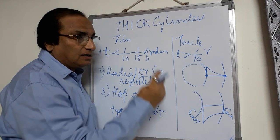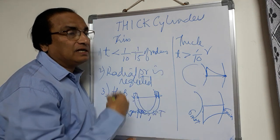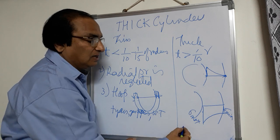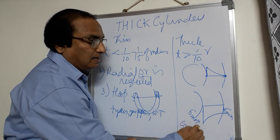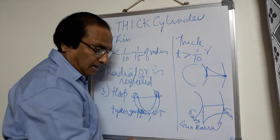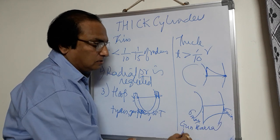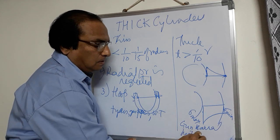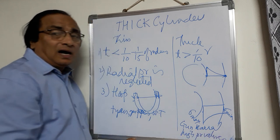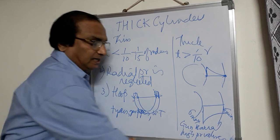Whereas here the thickness is heavy. When we use heavy thickness, definitely the pressure will be very high. So here you can give an example of gun barrel and high pressure walls. These are some of the examples of the thick cylinder.